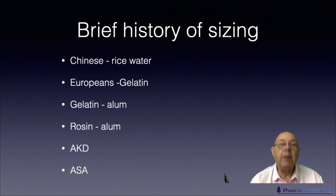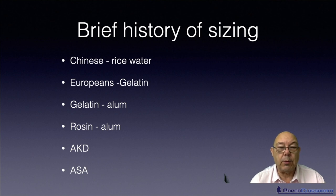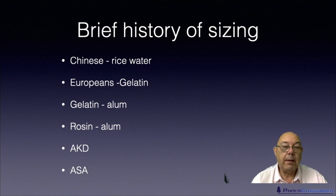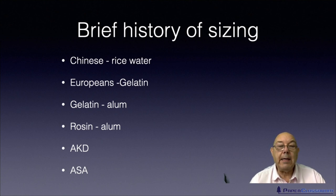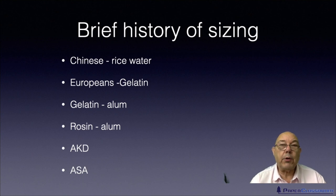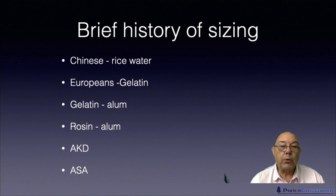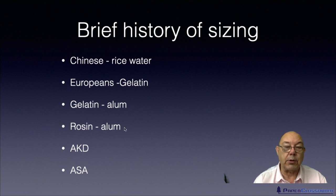We moved to AKD because of the problems with rosin alum. The acidity of the old rosin alum systems damaged the paper, and it prevented people from using calcium carbonate, which they wanted to do. And then finally we came up with ASA — alkenyl succinic anhydride. In the next video we'll talk about these last three sizing materials: rosin alum systems, AKD, and ASA.